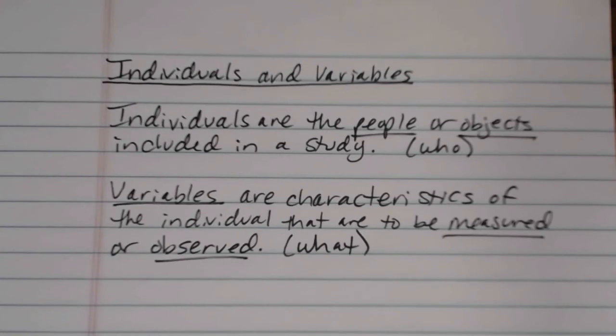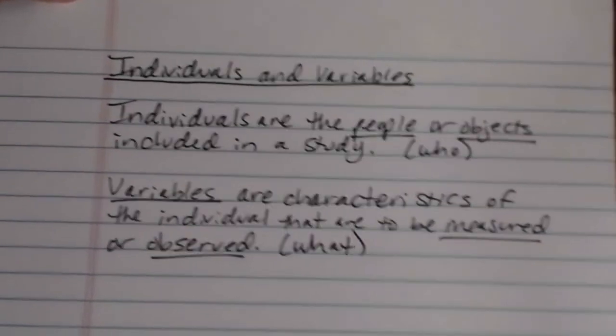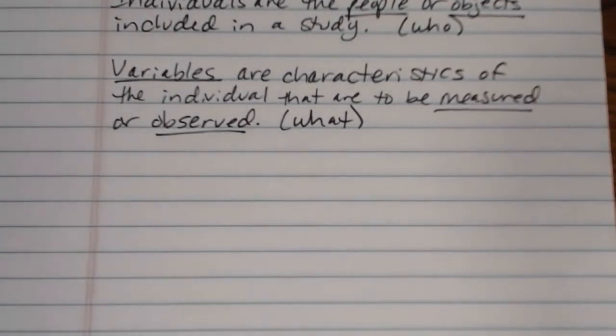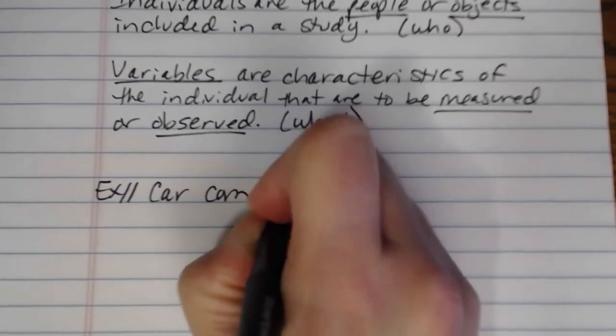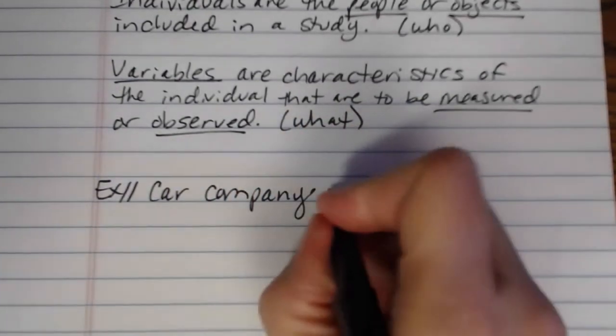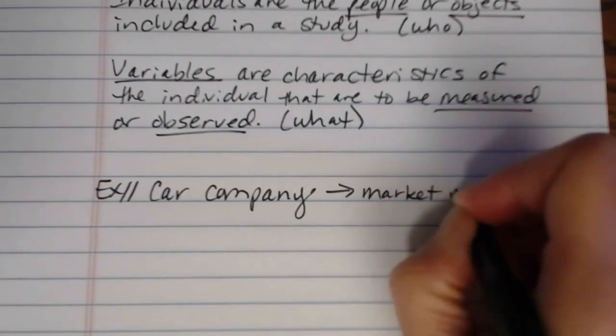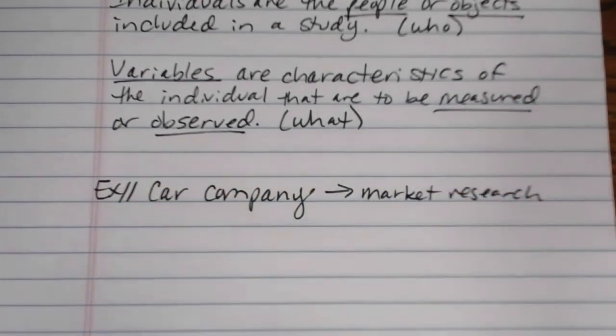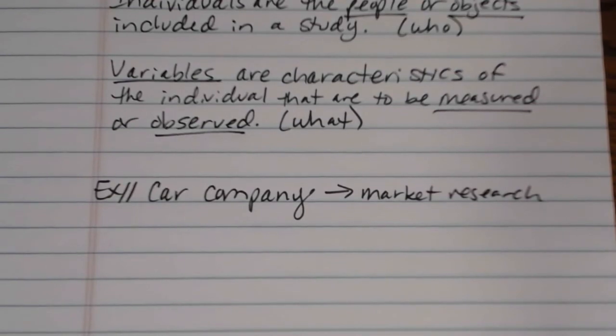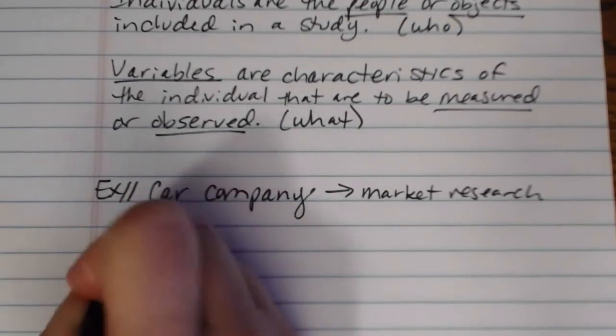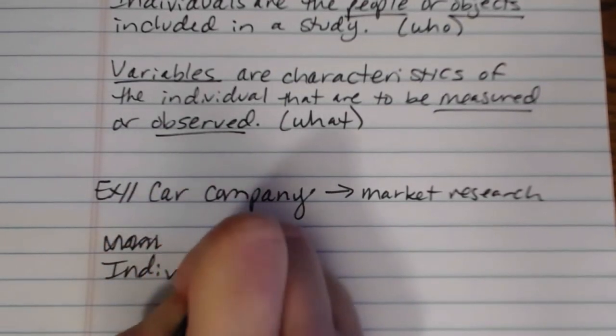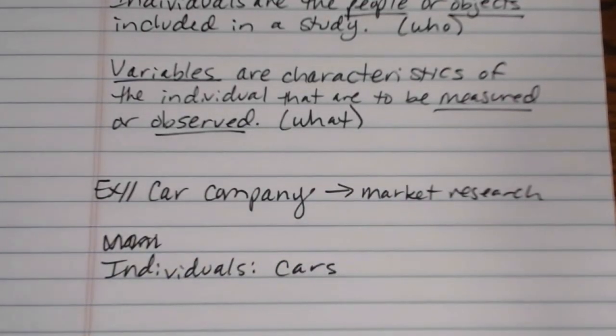So let me give you an example. Let's say that we are working for a car company. And we're going to do some market research. So we're going to collect a bunch of information about a bunch of different cars. So the individuals would be the cars, right? That's what we're including in the study. We are going to observe or record information about different types of cars.